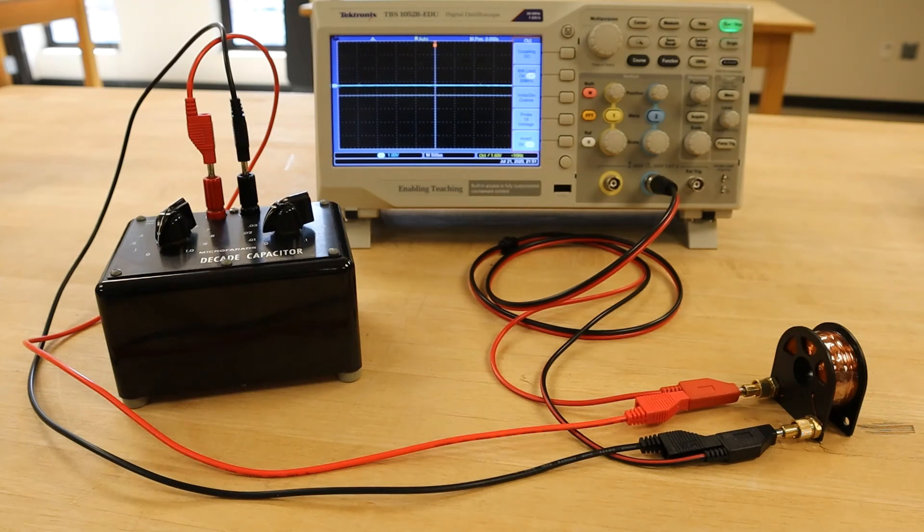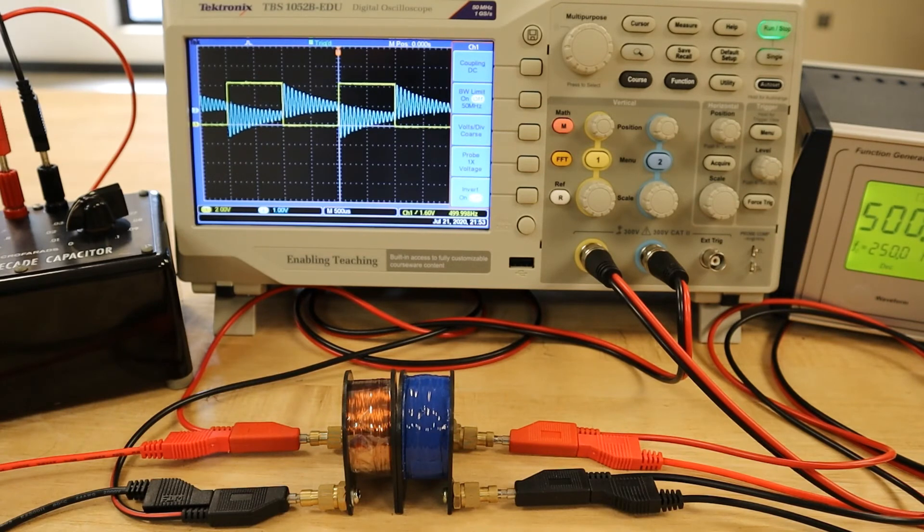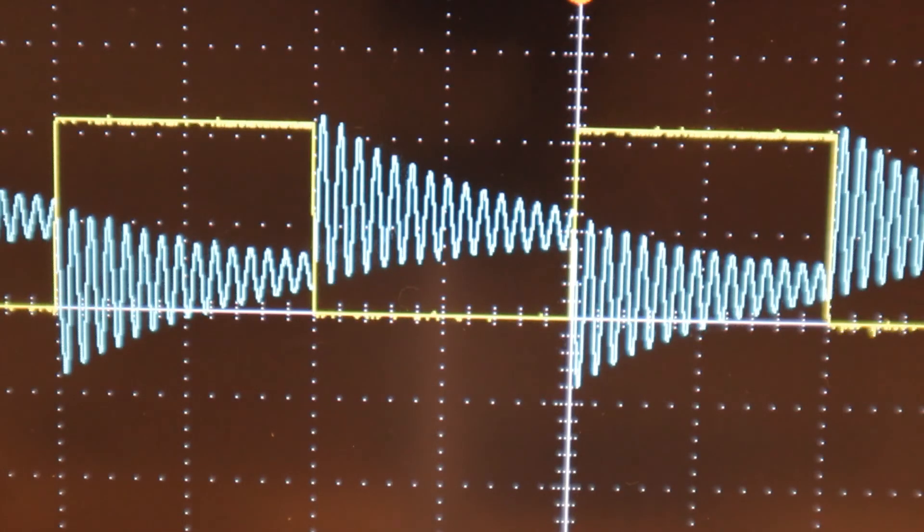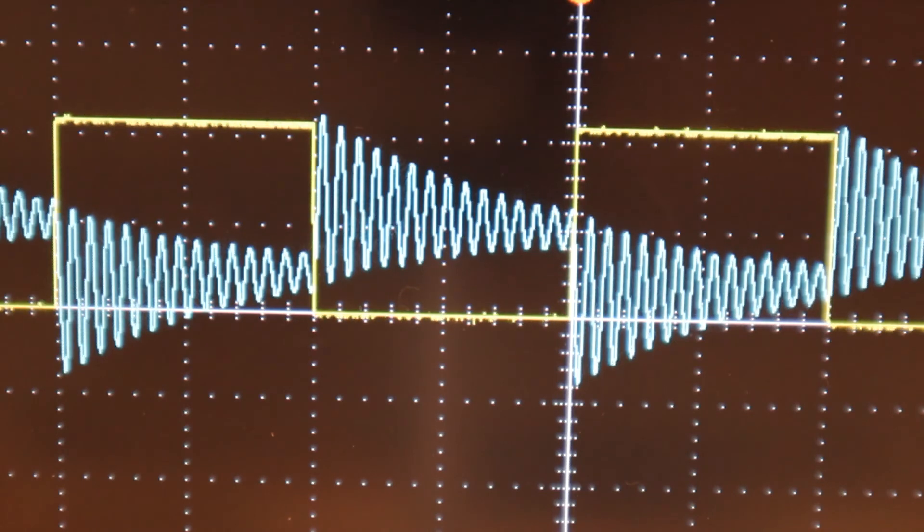In ideal circumstances, this process would cycle endlessly, because once charged, an LC circuit should in theory continue to oscillate between charging the capacitor and the inductor. But because there is a small resistance in the wires of the inductor, the oscillations decrease over time, producing the damped or decaying signal.